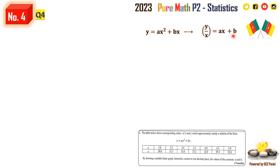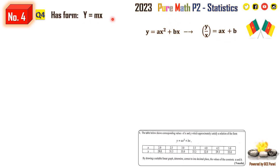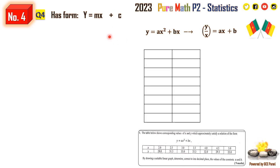It is now in the form y equals mx plus c. So we are going to make a table where we have the x values and the values of y over x.